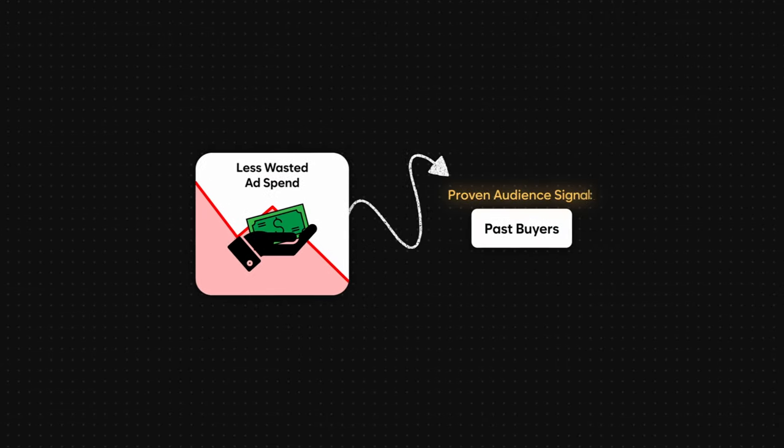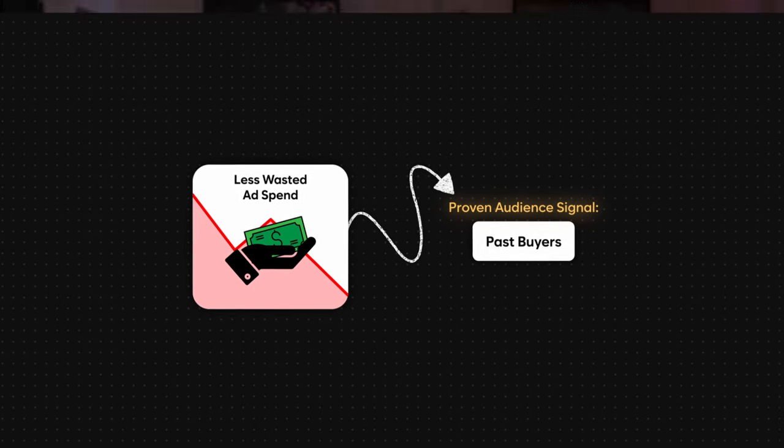When you identify those signals that are doing well, you can cycle in new images and things like that in your PMax campaigns by creating new asset groups with new content — new descriptions, images, videos — but using signals that have already proven themselves to work. This means less wasted ad spend because you're already using something you know is going to work.